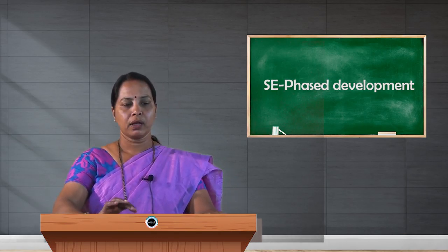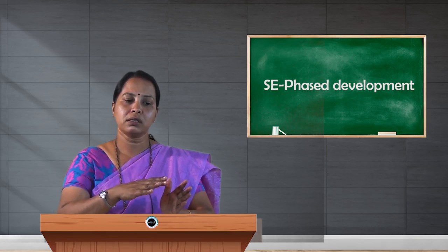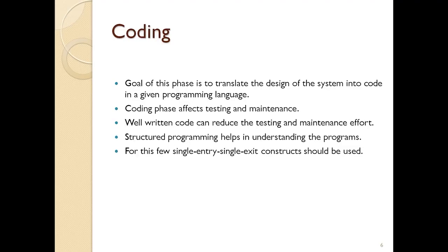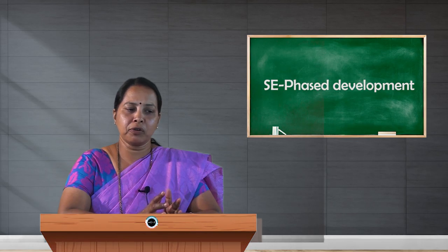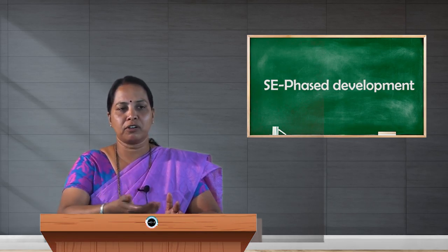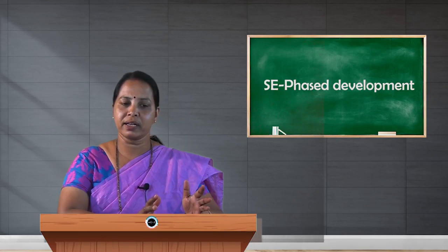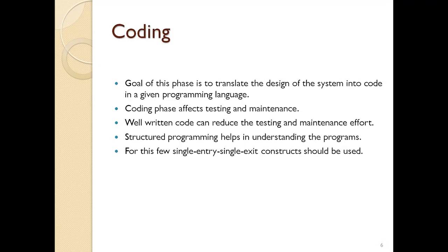Once the design is done, the next phase is coding, where the logic is translated into a particular programming language. The goal of this phase is to translate the design of the system into code. The coding phase affects testing and maintenance — simple or complex coding methods affect later maintenance. Well written code can reduce testing and maintenance effort, making modification of modules easier during the maintenance period.